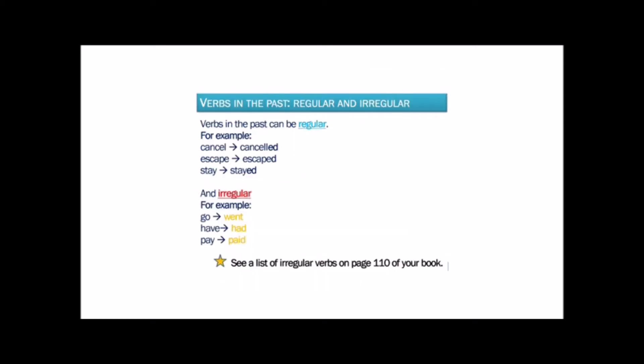It's important to remember that verbs in the past can be regular. For example: cancel, canceled; escape, escaped; stay, stayed. And irregular verbs. For example: go, went; have, had; pay, paid. I recommend that you read the list of irregular verbs on page 110 of your book. Now let's practice.